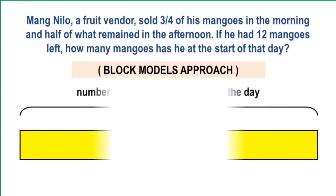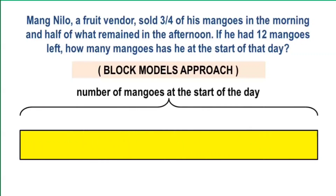We start with drawing a rectangle which represents the whole part, specifically the number of mangoes before some were sold. As stated in the problem, three-fourths of the mangoes were sold in the morning.